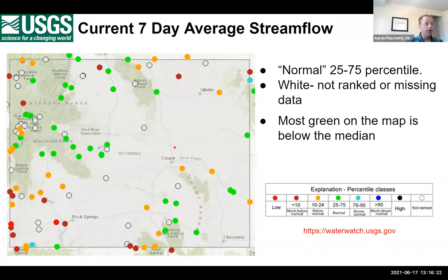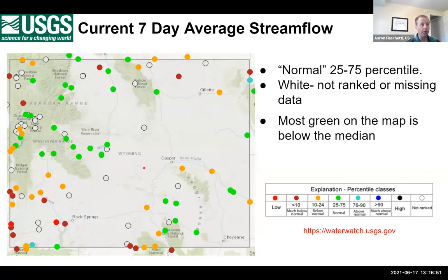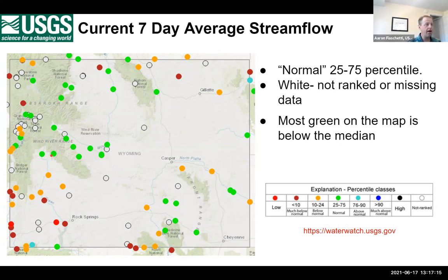Here we are in mid-June, and I wanted to go through our flows at our gauging stations. I wanted to spend a little bit of time talking about this graphic from WaterWatch, which is a really good way to get a handle on what's going on throughout the state. The green represents normal — any flow within the 25th to 75th percentile for the seven-day average. That's a pretty wide range, so we've got a fair amount of green, but not a ton. A lot of the green is actually below the median, so it may not be as rosy as it appears.